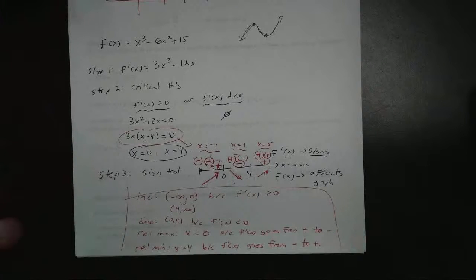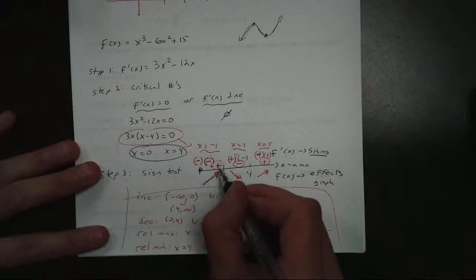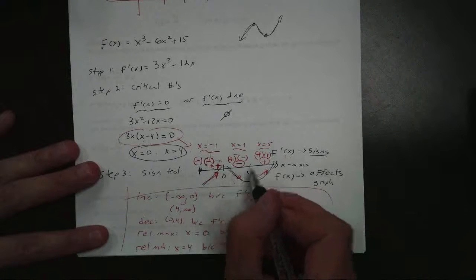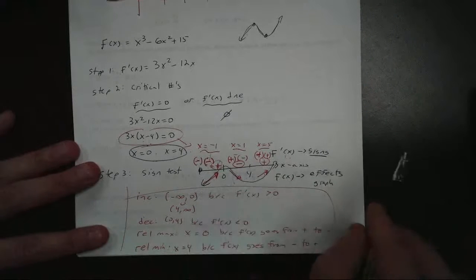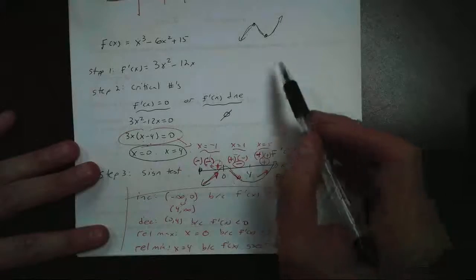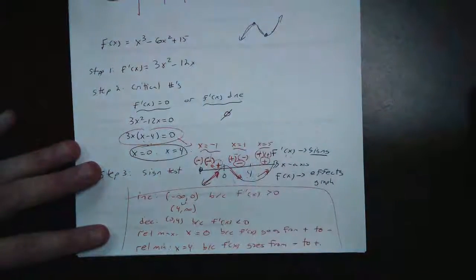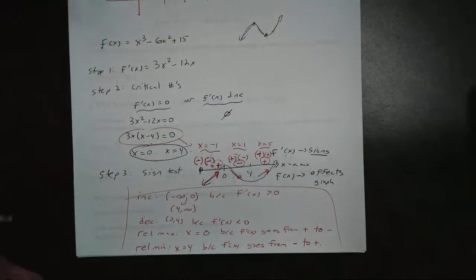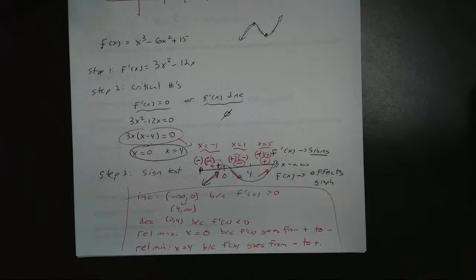And what I really like about the sign test is it kind of gives you the shape of the graph. Up, down, up. Uptown funk. Right? Okay. So, and it looks like our shape is what we thought it would be. So, on my next video, I am going to show you a couple more examples, a little bit more complicated. So, if you're in my BC class or AB class, take a look at them. Okay? Bye.